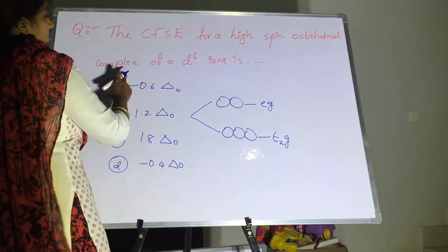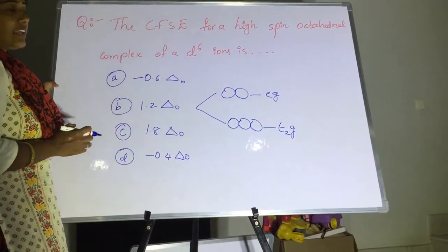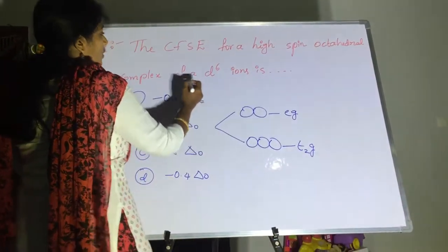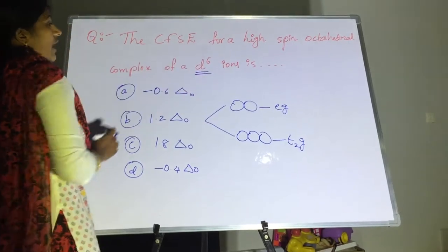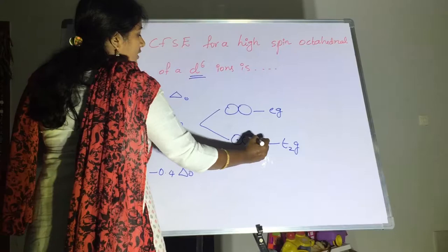So in case of high spin, high spin complex nothing but ligand strength is very less. So pairing is not possible and we have d6 having six electrons in each orbital. One, two, three.